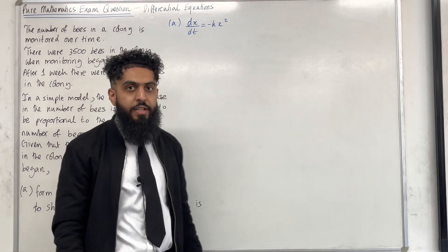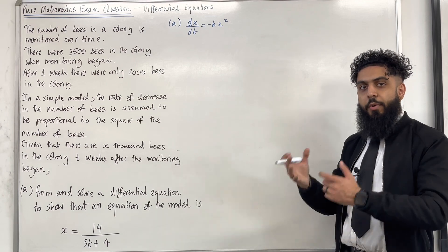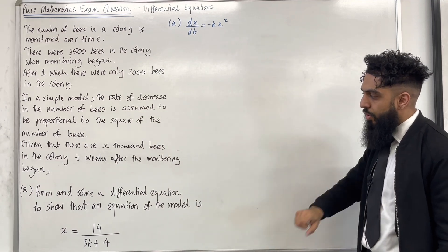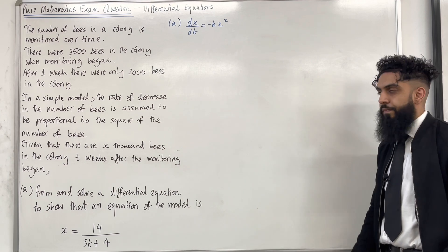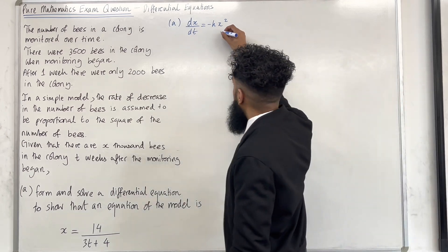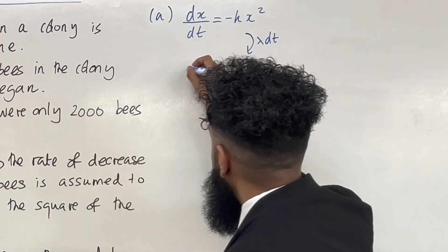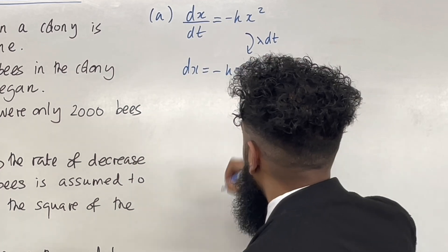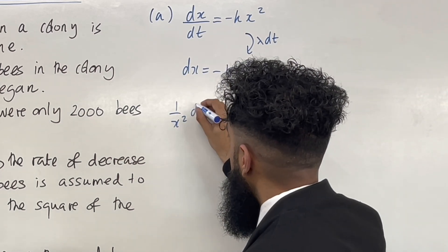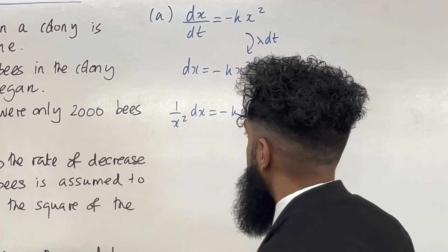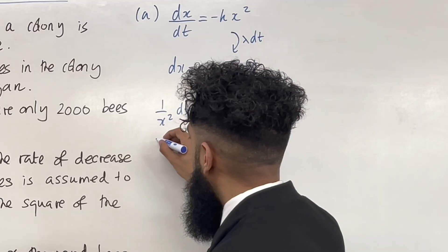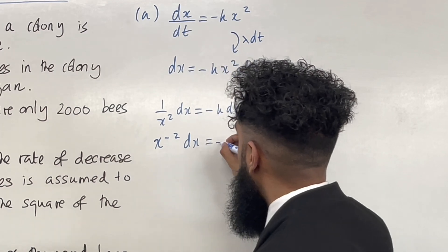So that is my differential equation. I'm going to solve this differential equation using the boundary conditions specified in this paragraph, in order to show that for this model, we have x equal 14 over 3t plus 4. The way we solve differential equations is to separate the variables. I can start off by multiplying both sides by dt, so I've got dx equal minus kx squared dt. Then I can divide both sides by x squared, giving me 1 over x squared dx equal minus k dt. Now 1 over x squared is the same as writing x to the power minus 2, so I've got x to the power minus 2 dx equal minus k dt.